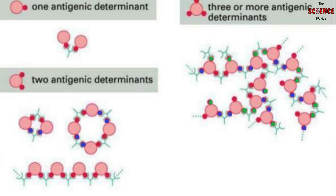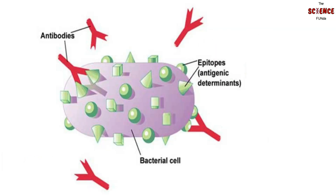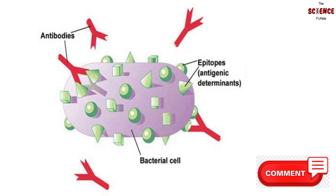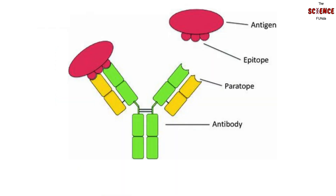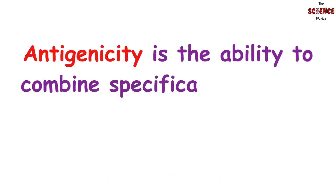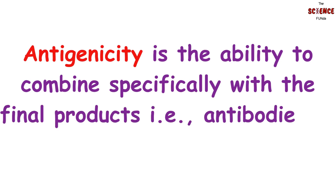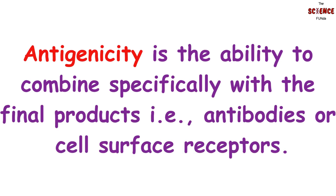Every antigen has one or more epitopes. An antibody has at least two binding sites that can bind to specific epitopes on antigens. Since an epitope is the part of the antigen that binds to the antibody, it determines the antigenicity of the antigen, which is why it is given the term antigenic determinant. Antigenicity is the ability to combine specifically with the final products that are antibodies or cell surface receptors.